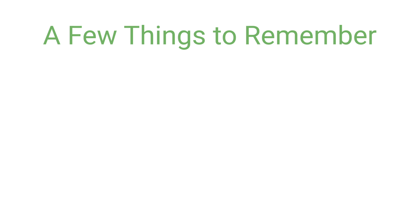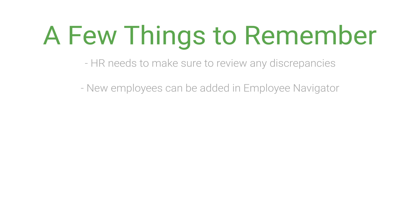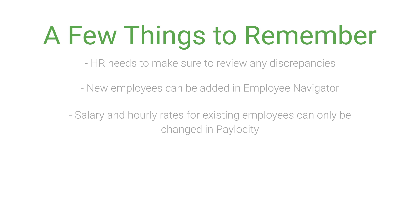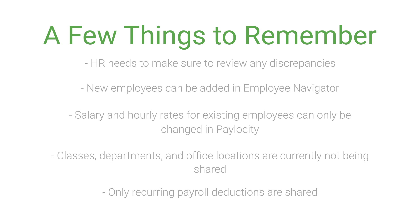A few things to remember: HR needs to make sure to review any discrepancies. New employees can be added in Employee Navigator or Paylocity. Salary and hourly rates for existing employees can only be changed in Paylocity. Classes, departments, and office locations are currently not being shared. Only recurring payroll deductions are shared, meaning retroactive deductions need to be manually entered in Paylocity. And that's it!